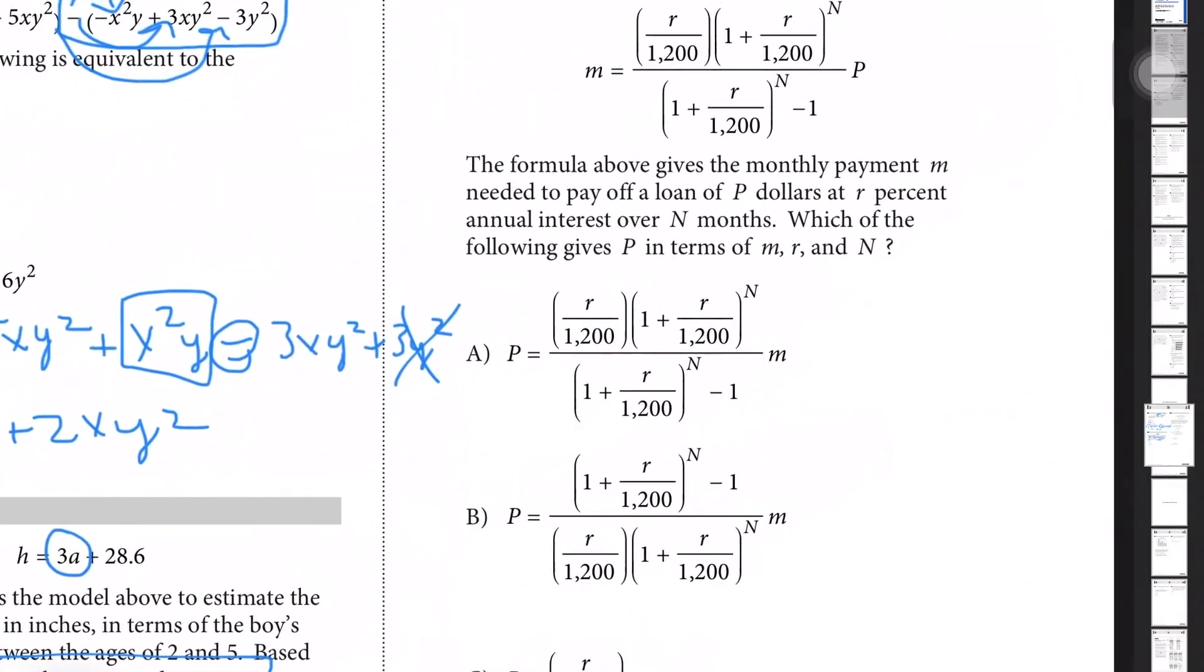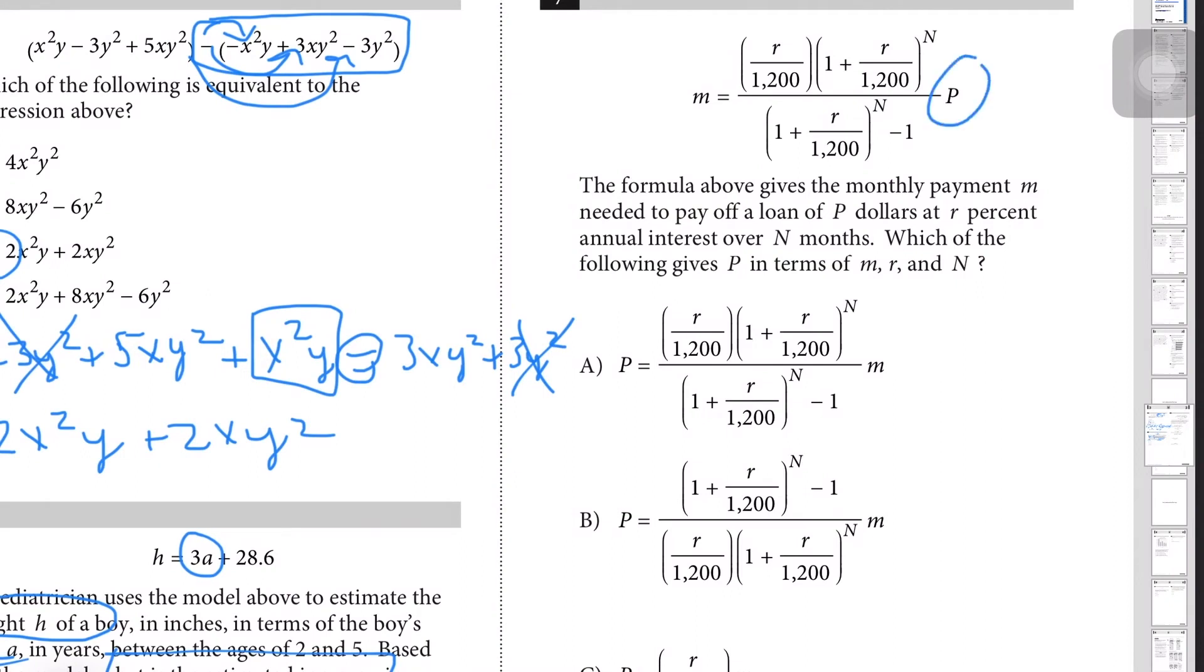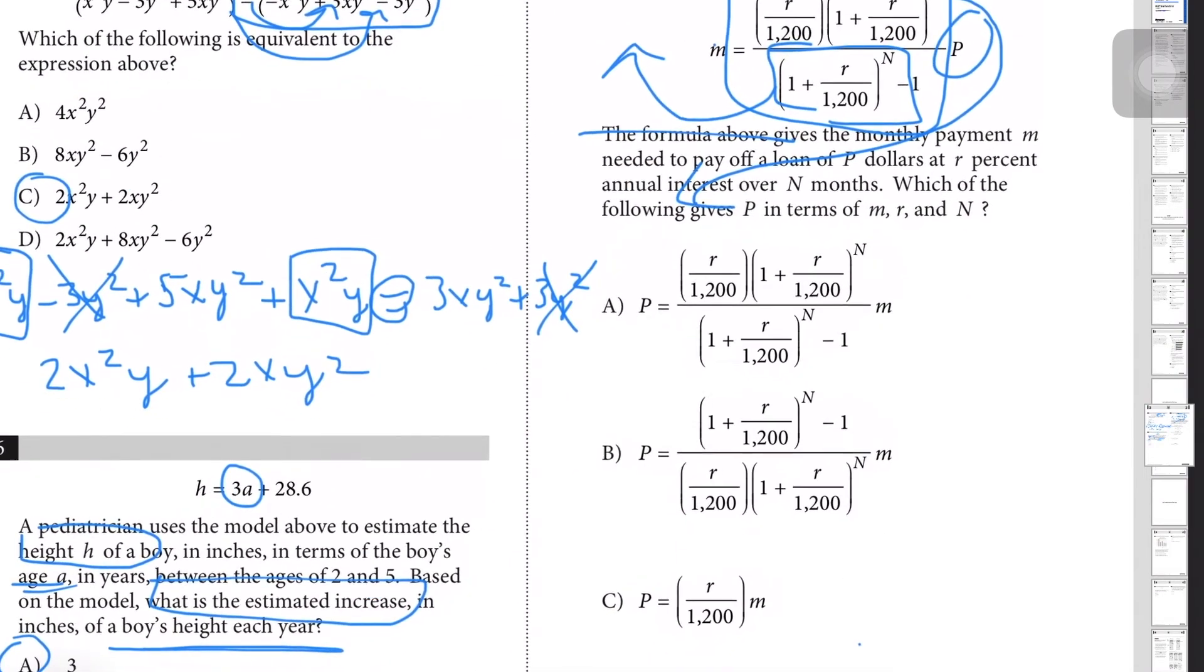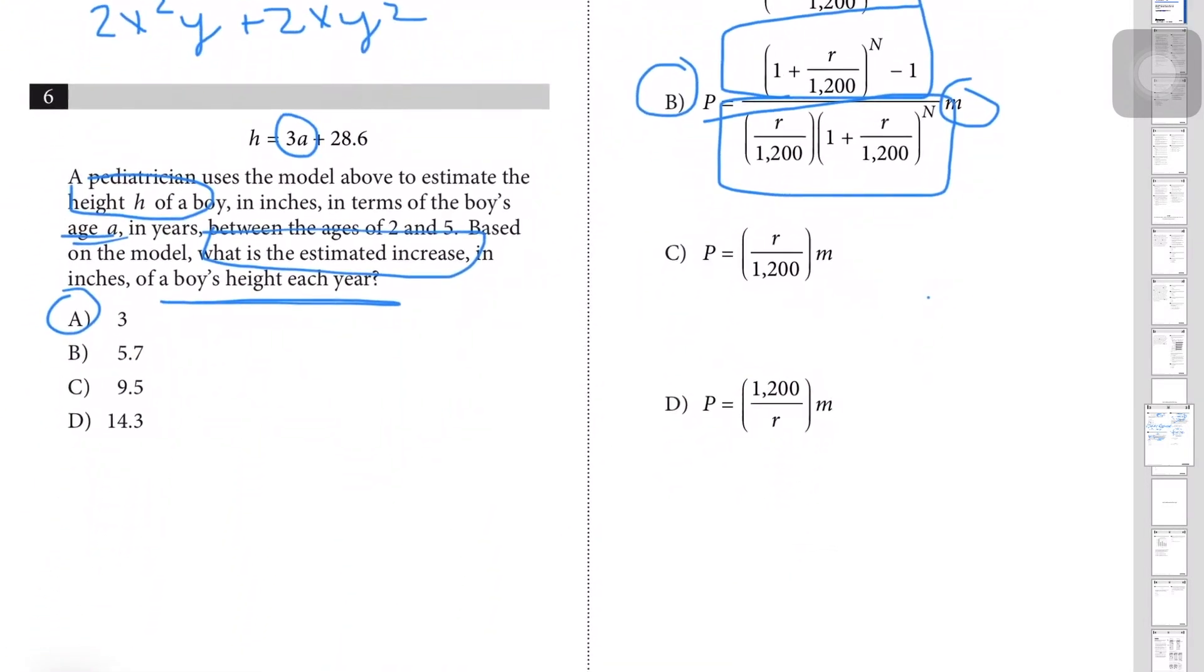Question number 7: the formula above gives the monthly payment m needed to pay off a loan of p dollars at r percent annual interest over n months. Which of the following gives p in terms of m, r, and n? For this question we're simply isolating p and we have to bring all these other elements to the other side. I would first isolate the denominator, just bring that to the other side, and then the top elements would simply get divided. So we're looking for an answer that has m in the numerator while this moves to the bottom and gets divided. Scrolling to the answers, B could be the only possible answer for this question because we have the elements of the numerator coming into the denominator and then we also have the denominator coming to the numerator multiplied by m. So B is the correct answer for number 7.